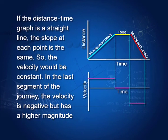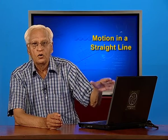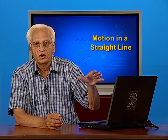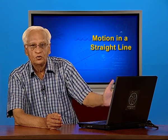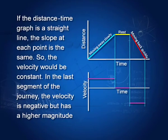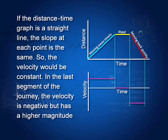Now I will show you how to draw various graphs. If you have a distance time graph, how can you get from this the velocity time graph? Looking at the upper graph — it is the distance time graph. The body is moving away, then it is at rest, then it is moving back but faster. What would the velocity time graph look like? Velocity initially is constant, then velocity becomes 0, and then the velocity becomes negative with a larger magnitude than the earlier velocity. From the distance time graph, we have arrived at the velocity time graph.